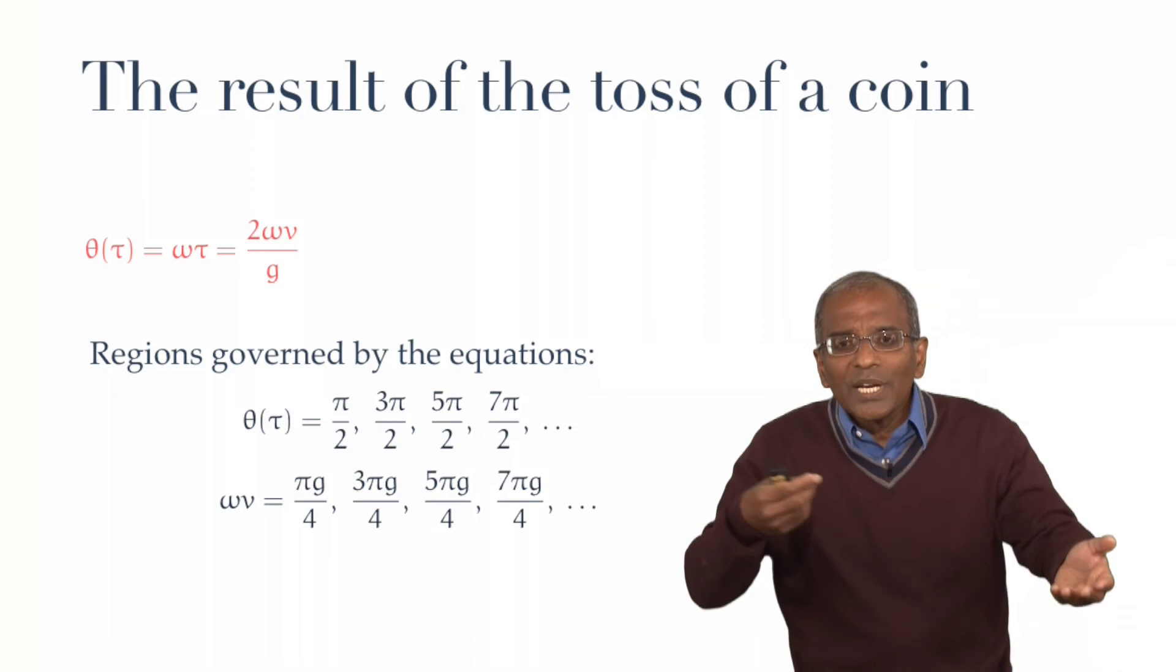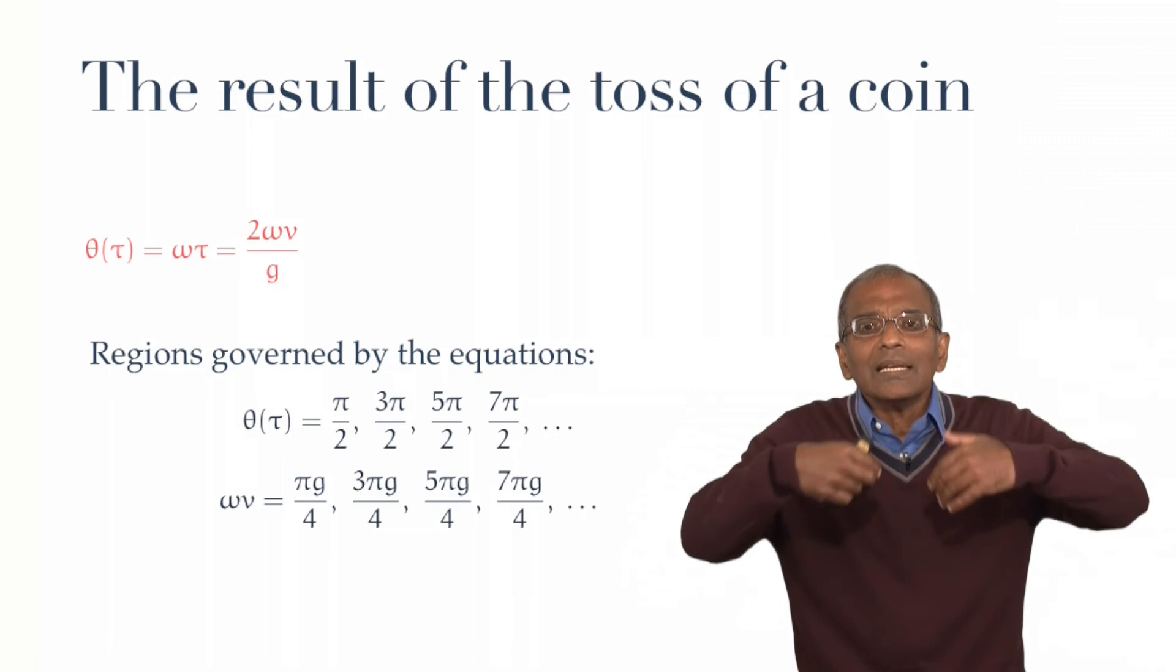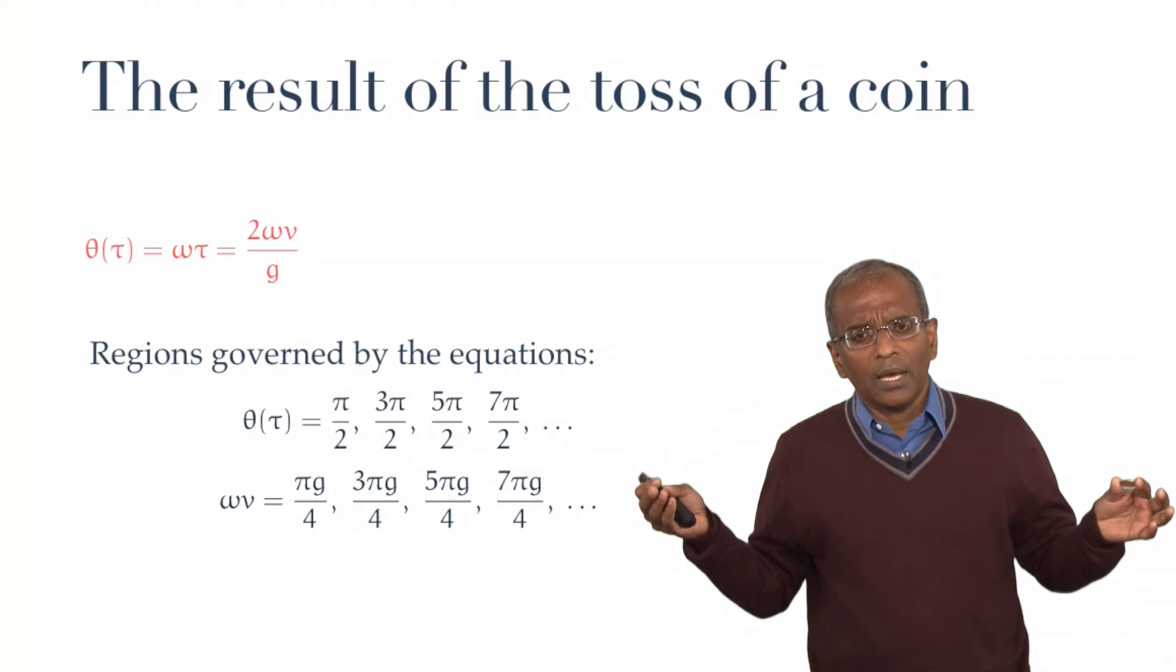If you increase speed and velocity in concert, in such a way that you land in the next band, you will get a tail. This seems like there is no room here for anything but determinism.